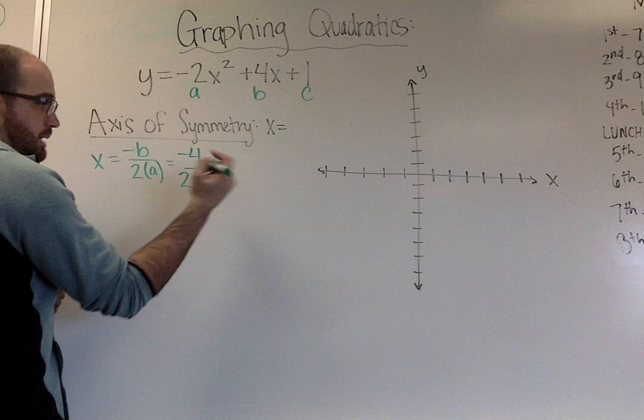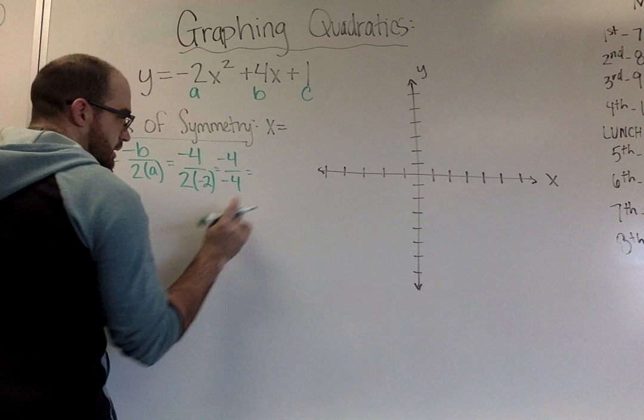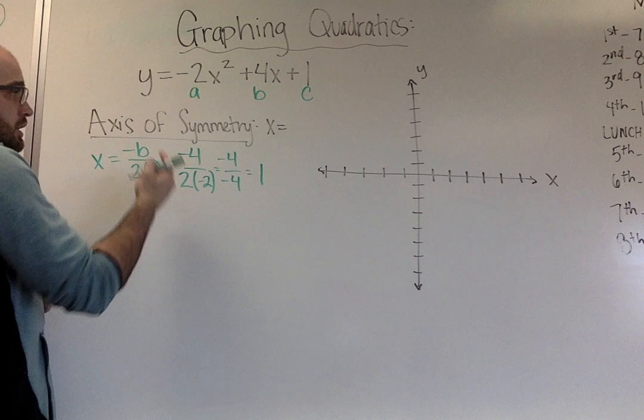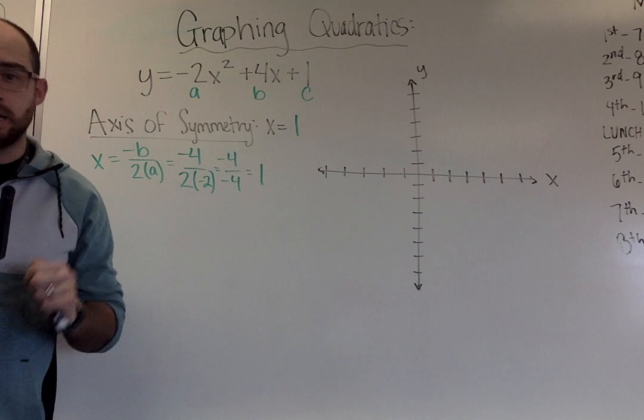The top there's nothing to do, so it just stays negative 4. The bottom, 2 times negative 2 gets me negative 4. When I divide this, negative 4 divided by negative 4 gets me a whole number 1. So, for my axis of symmetry, I have x equals 1.